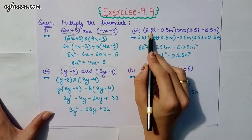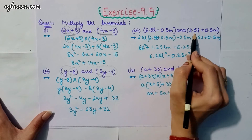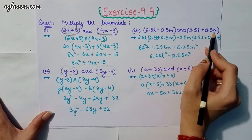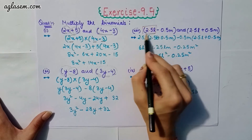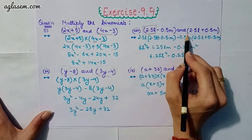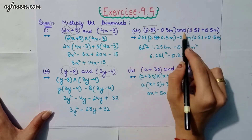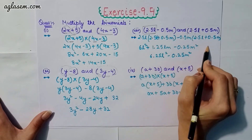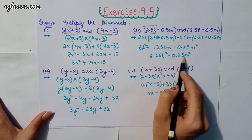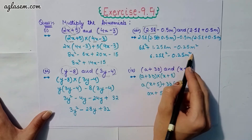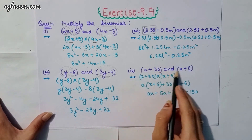Moving to the third part: (2.5l − 0.5m) and (2.5l + 0.5m). Again, 2.5l will be multiplied by this whole bracket and minus 0.5m will again multiply by this whole bracket. So our answer will be 6.25l² − 0.25m².